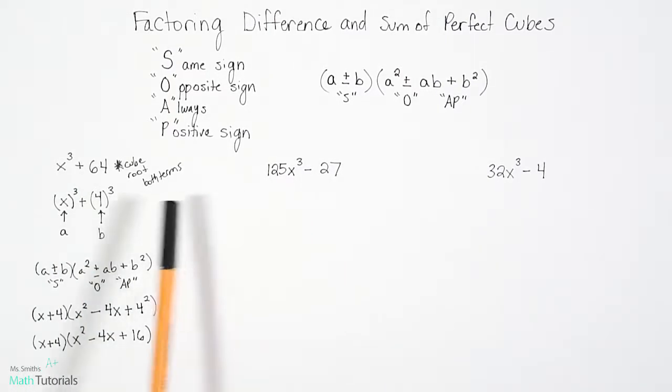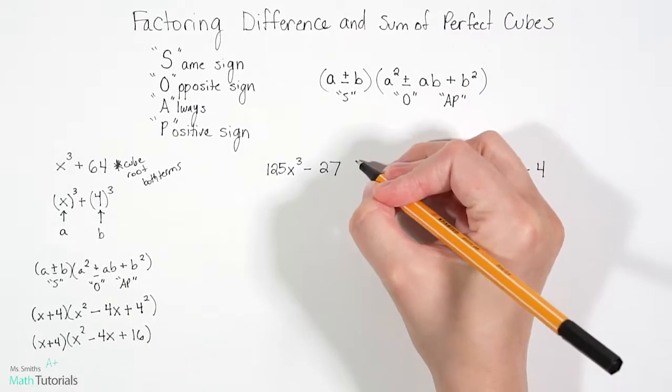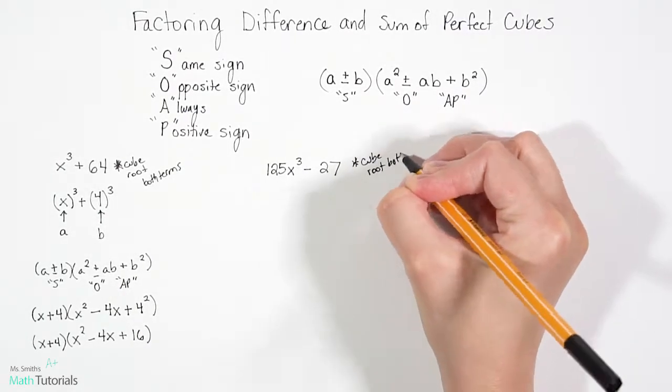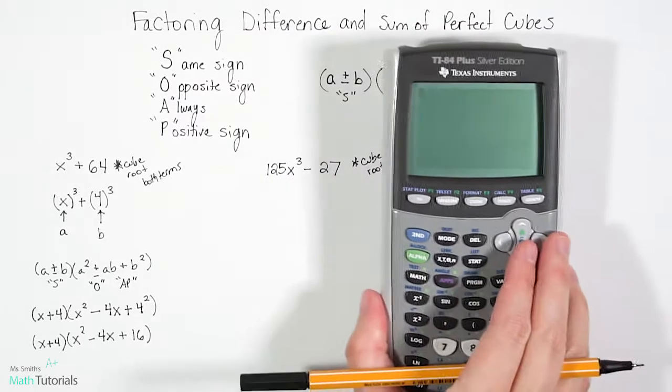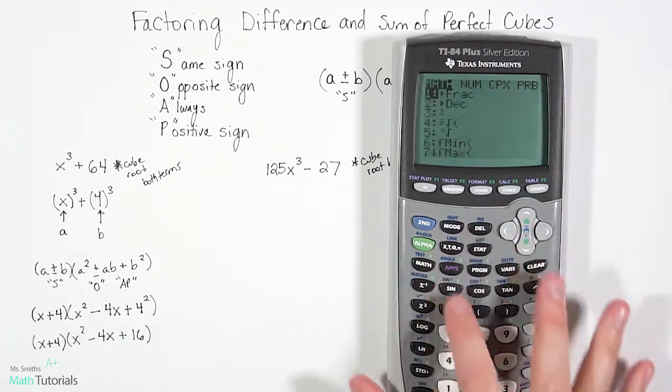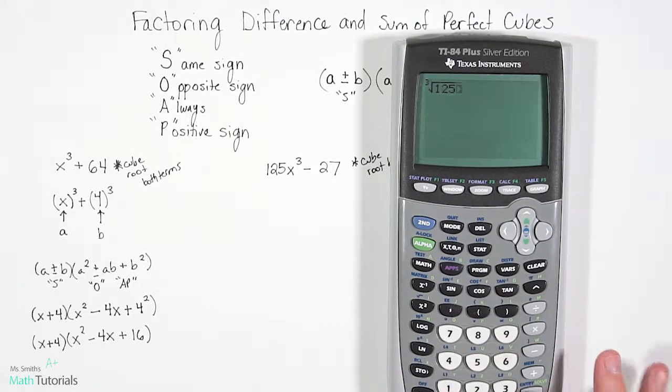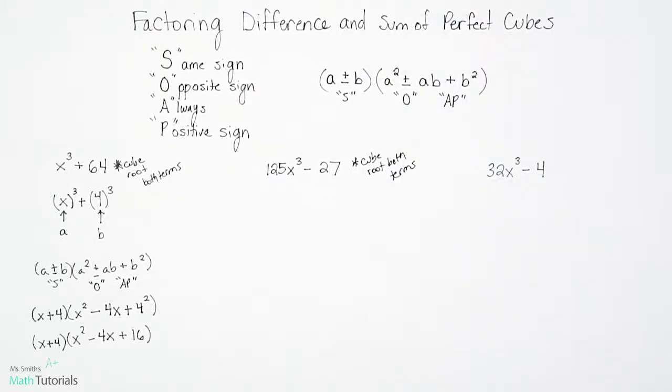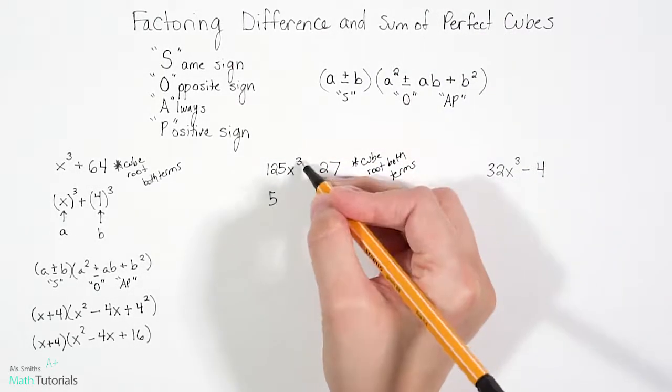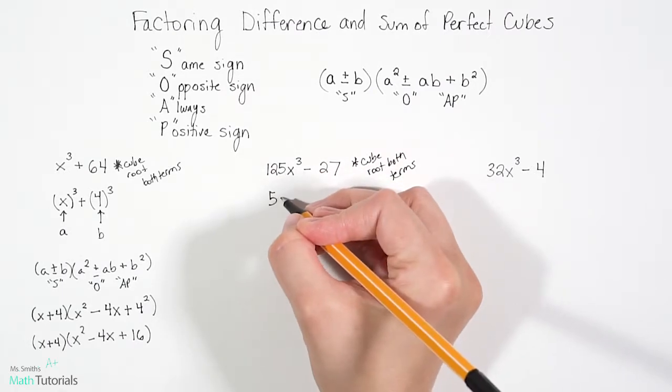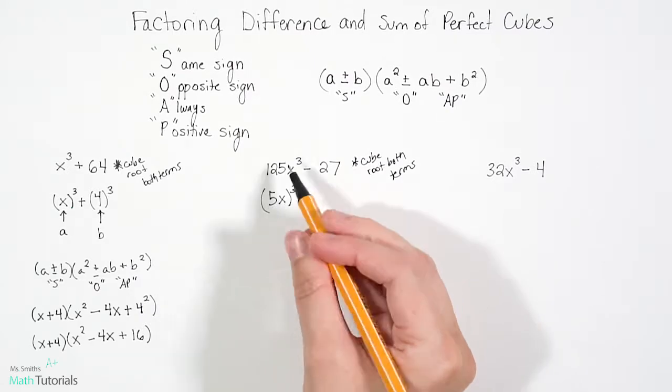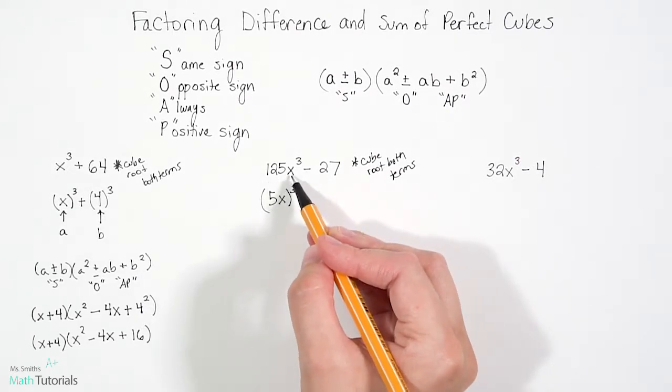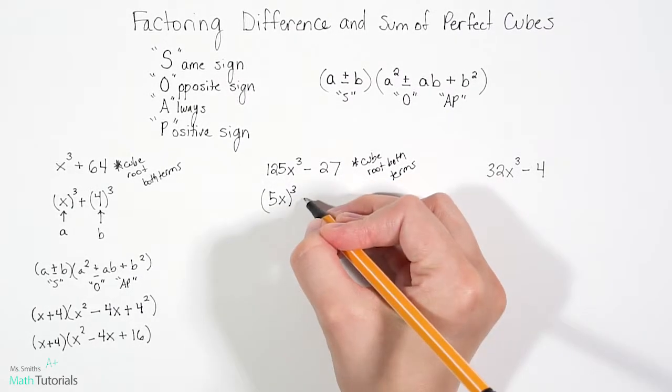Let's try another one. So for this one, remember our first step is the same. We're going to cube root both terms. The cubed root of 125. Let's see what that would be. So you just go to math 4 and we'll type in 125. So our cubed root of 125 is 5. Our cubed root of x³ is just x. So if we cube 5x, we will end up with 125x³. We'll bring our minus down.